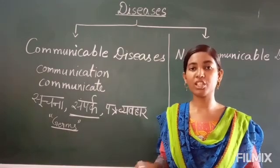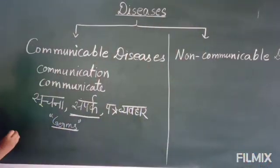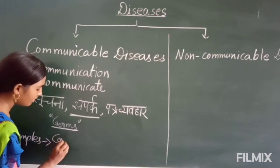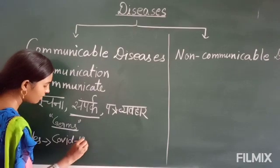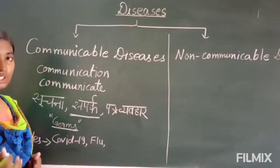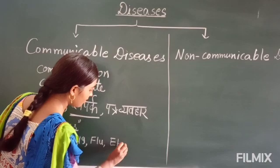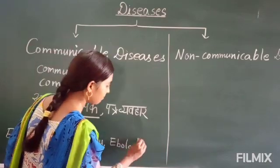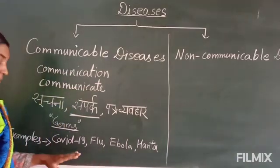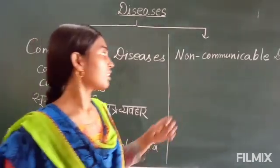Now let us see some examples of communicable diseases. The most common example nowadays is COVID-19. After that, flu — this flu is also spreading with the help of germs from one person to another person. Then Ebola virus, which we have also heard of, and Hanta virus. So these are diseases which spread with the help of germs. Germs are the responsible part in spreading communicable disease.